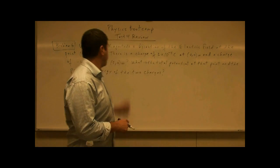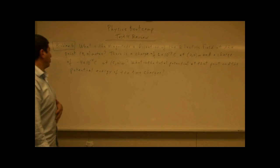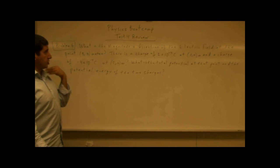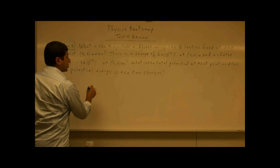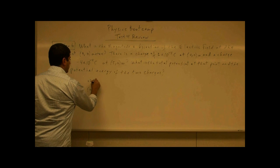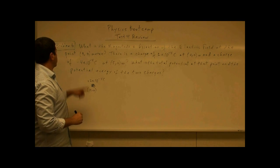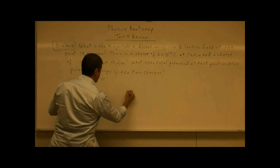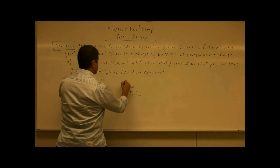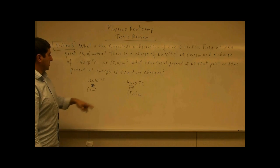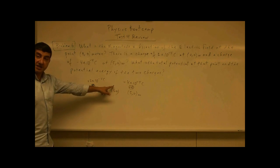Welcome back. We've now come to problem 6 for the test 4 review of the physics boot camp. Problem 6 asks what is the magnitude and direction of the electric field at 0.30 meters. There's a charge of positive 2 times 10 to the minus 4 coulombs at the origin, and a charge of negative 4 times 10 to the minus 4 coulombs at 5, 0 meters. We want to know the electric field created at the point 3, 0 due to those charges.